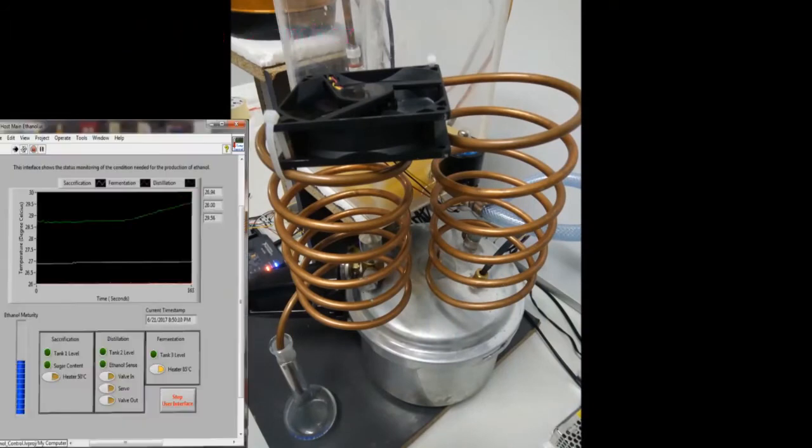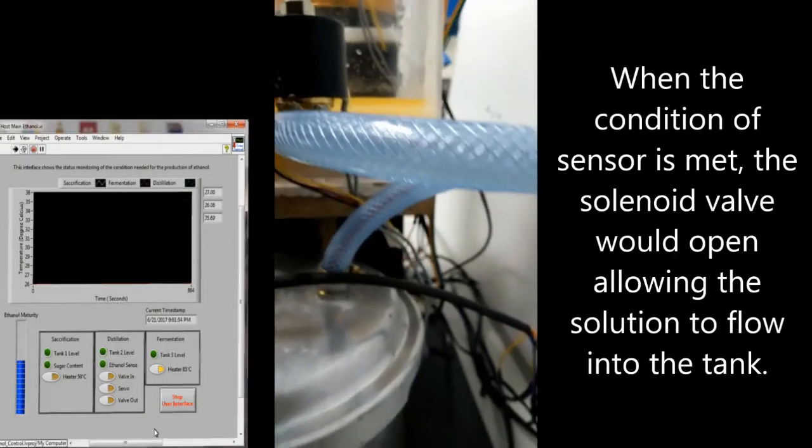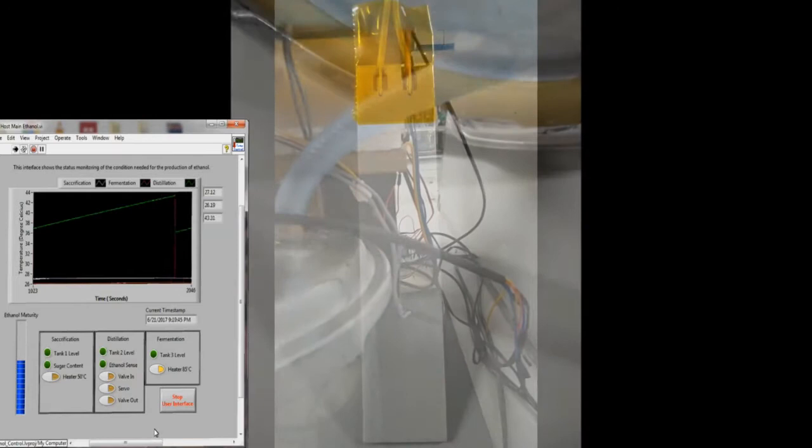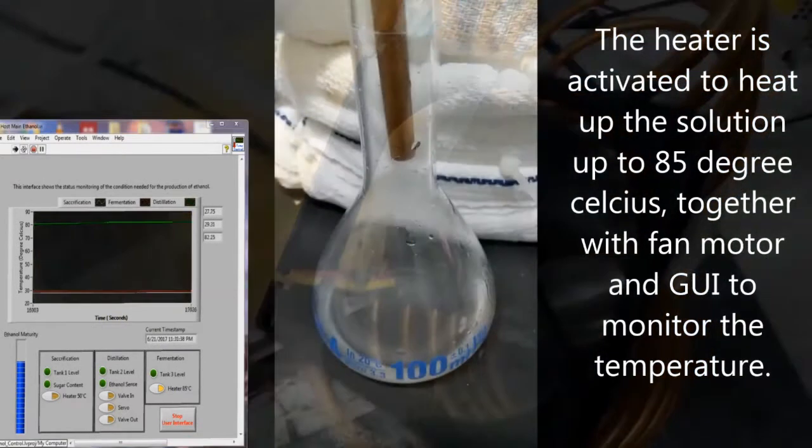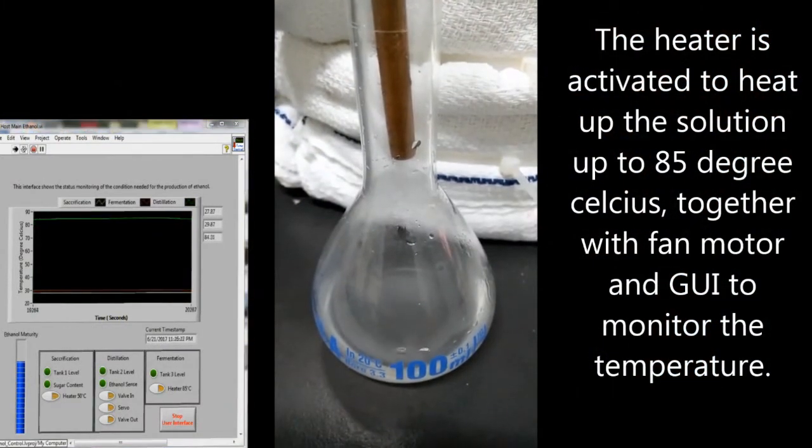The third system is the distillation chamber. When the sensor condition is met, the solenoid valve opens, allowing the solution to flow into the tank. The heater is activated to heat the solution to 85 degrees Celsius, together with a fan motor and GUI to monitor the temperature.